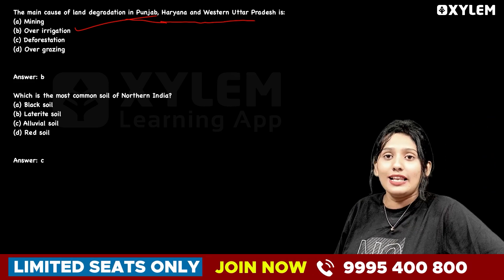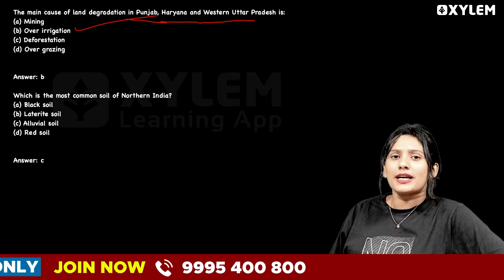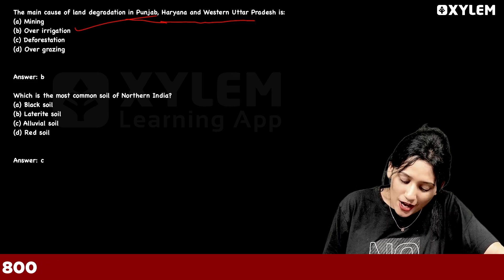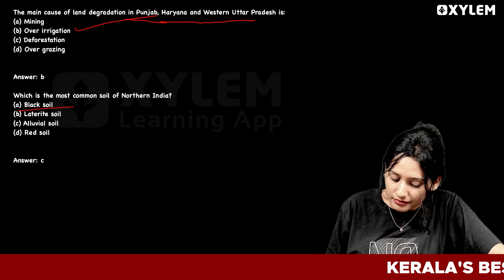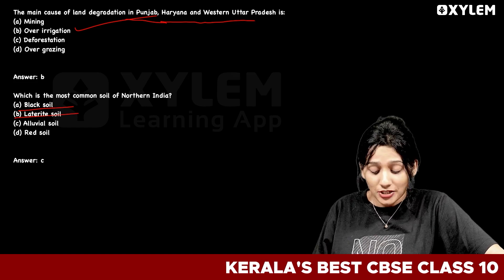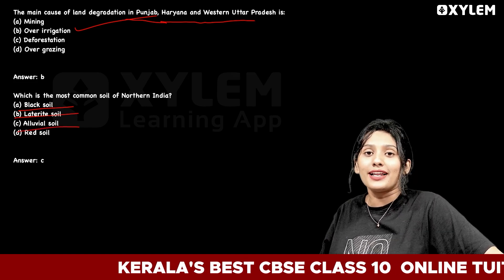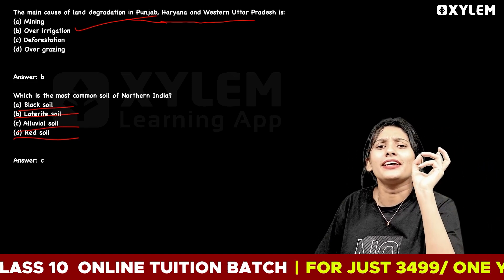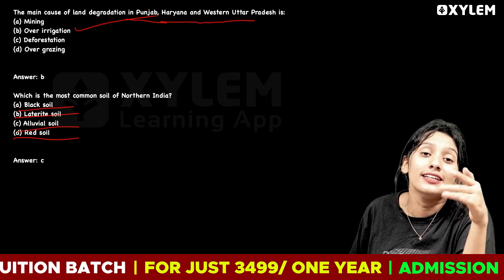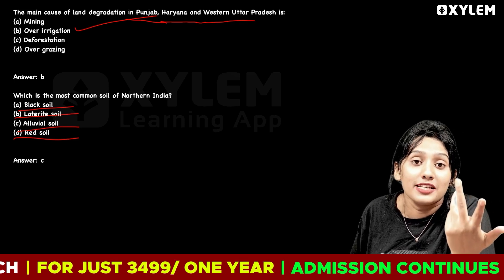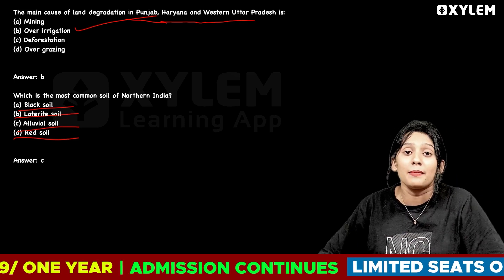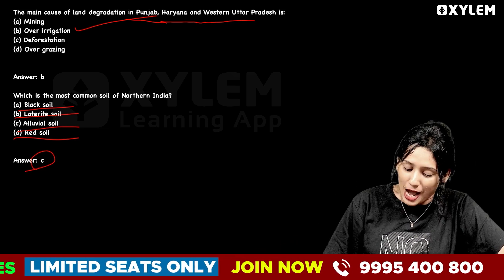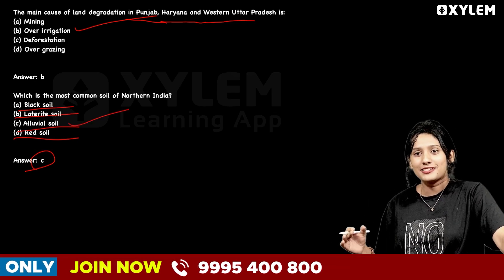Next question: which is the most common soil in the Northern Plains? Option A is black soil, Option B is laterite soil, Option C is alluvial soil, Option D is red soil. Because rivers like the Indus, Ganga, and Brahmaputra flow through the Northern Plains, the soil type found there is alluvial soil. Option C, alluvial soil, is the correct answer.